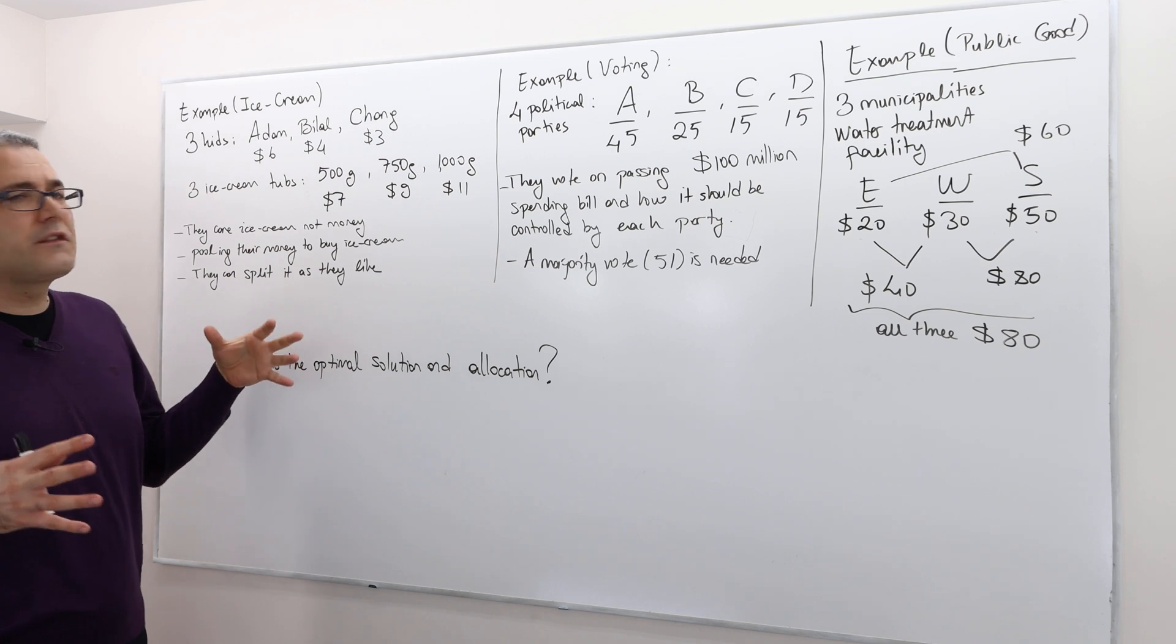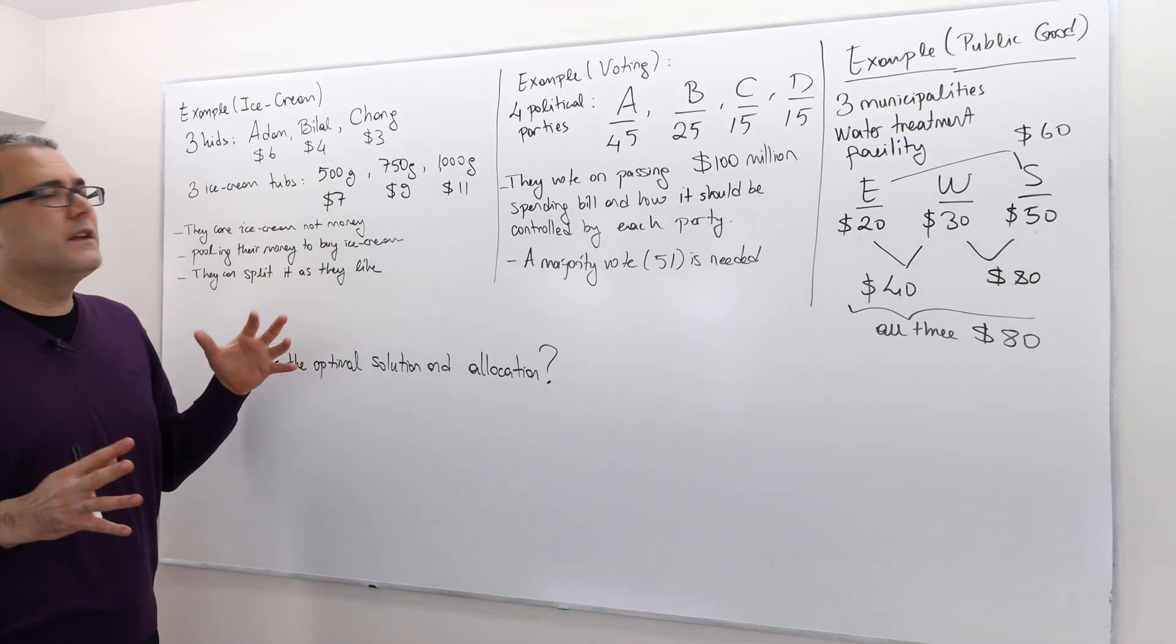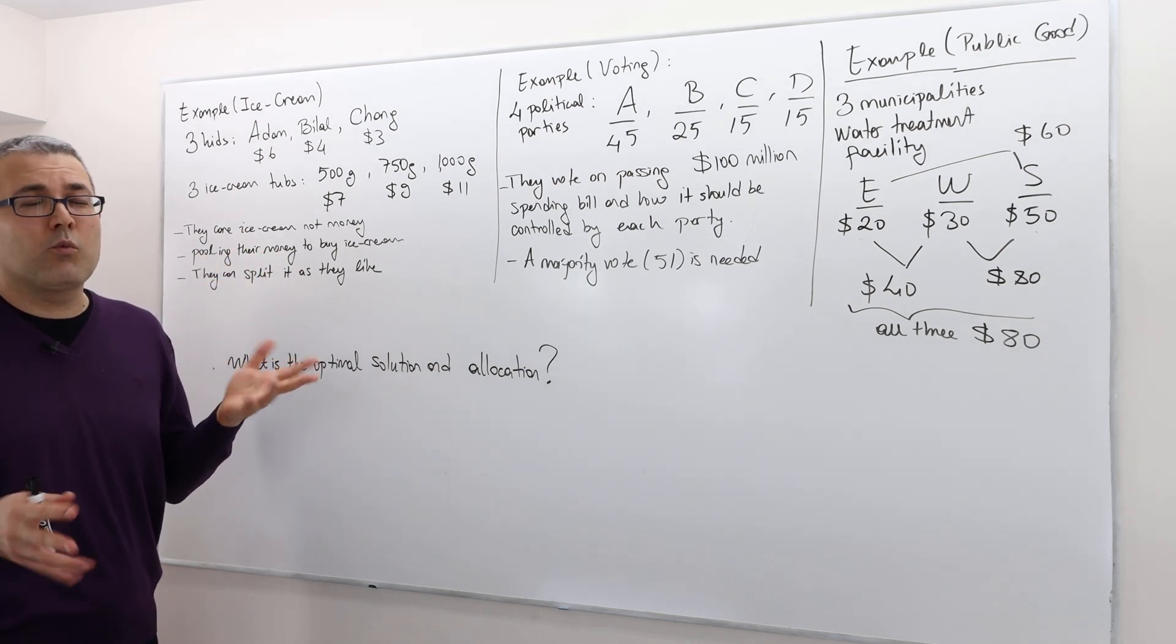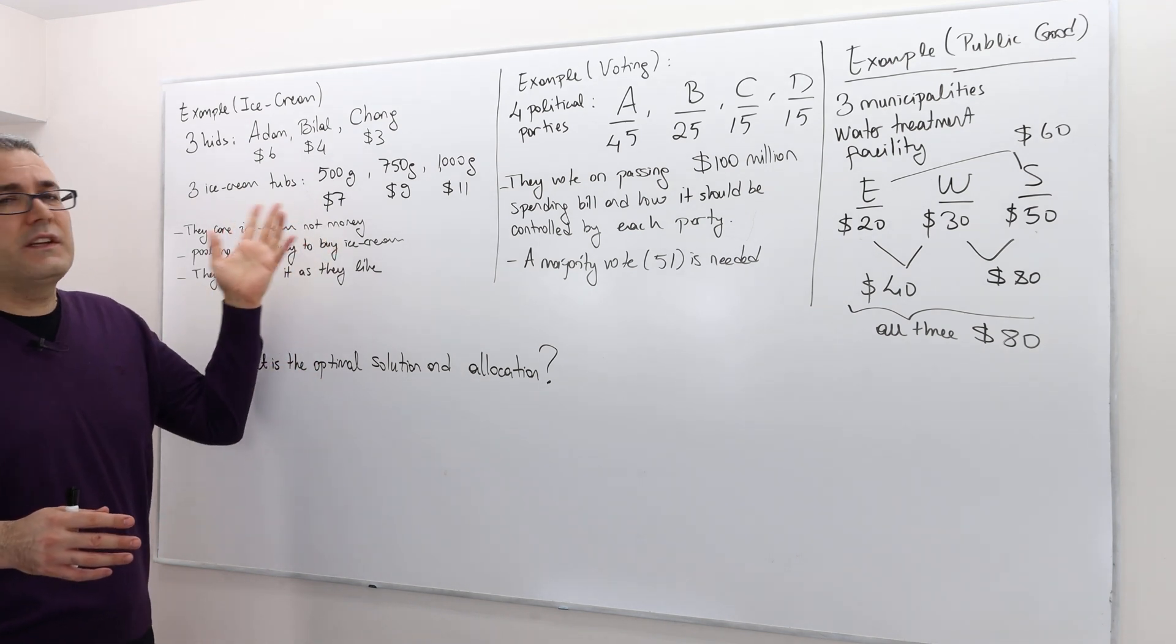Well, there are three ice cream tubs - only three. One of them is a small size, 500 grams, which is like 1.1 pounds, and its cost is seven dollars.